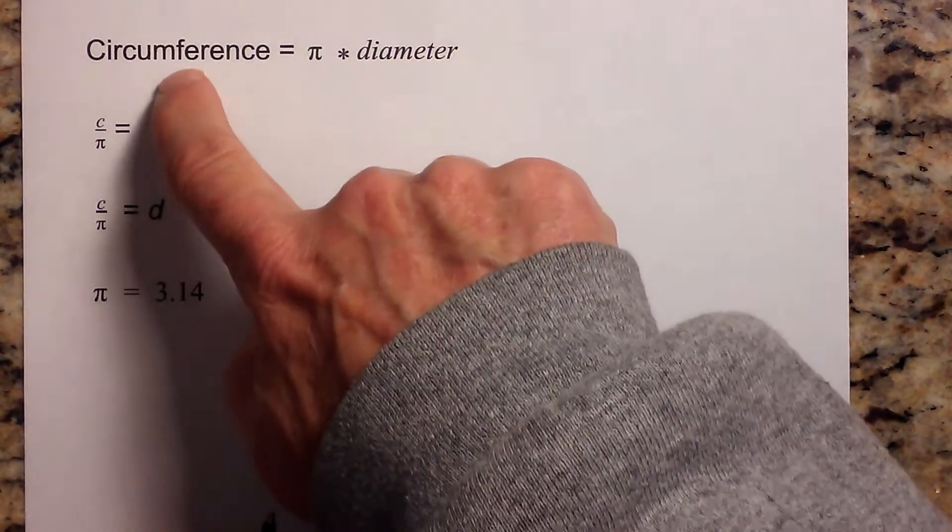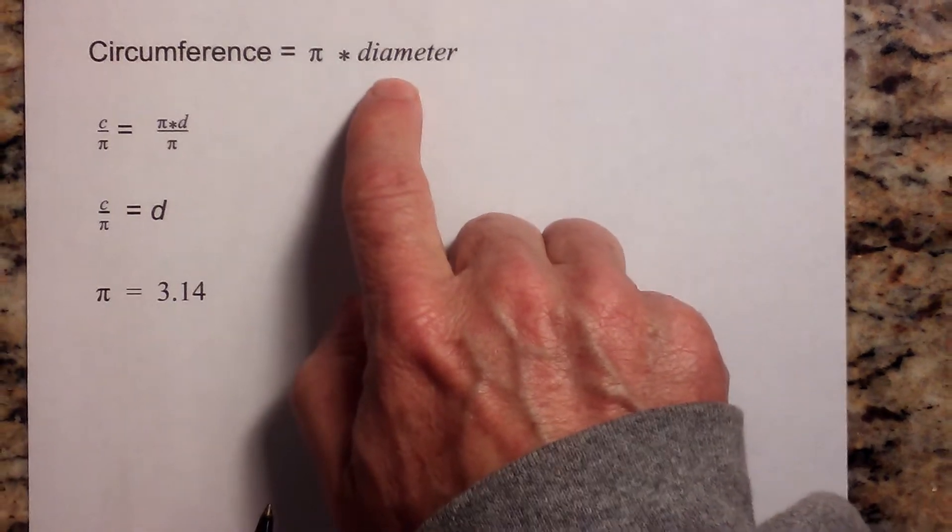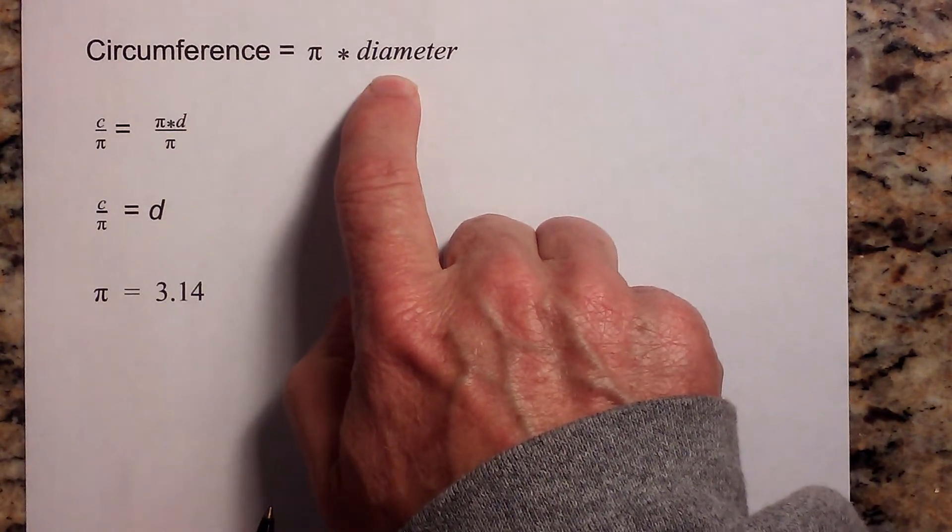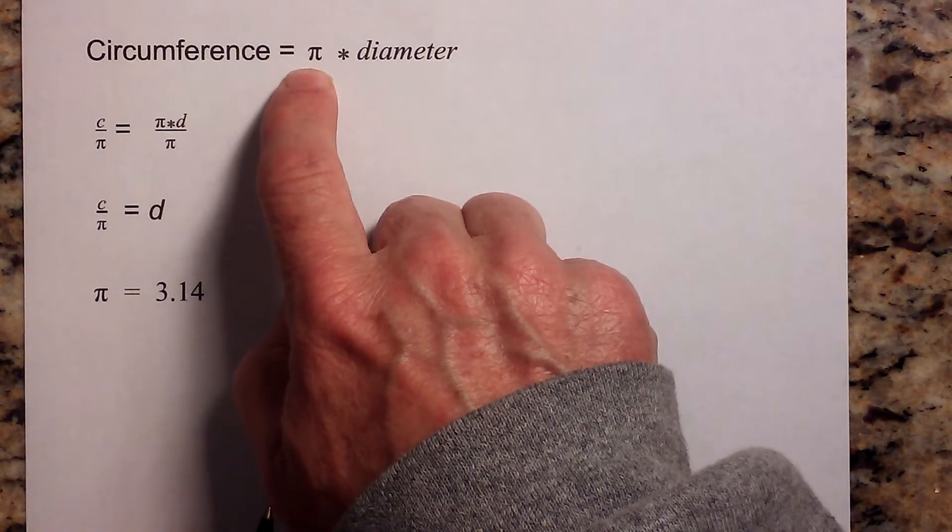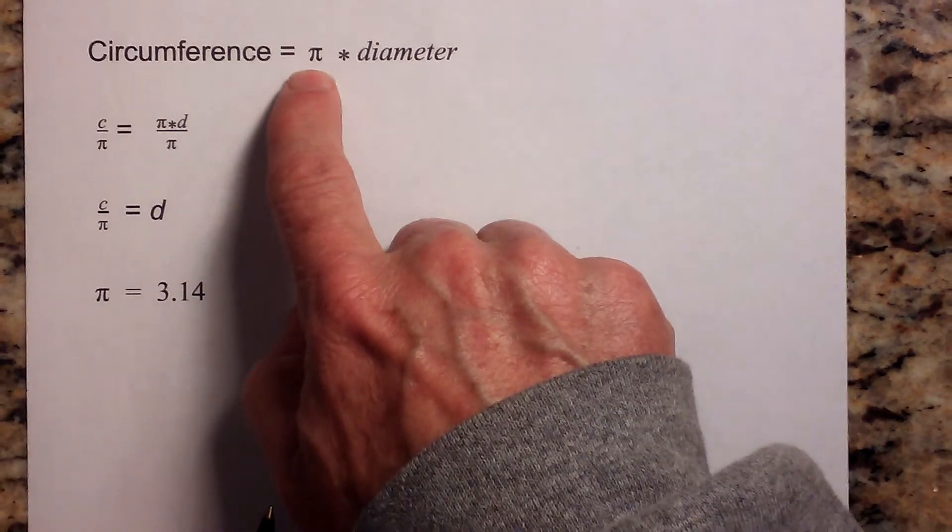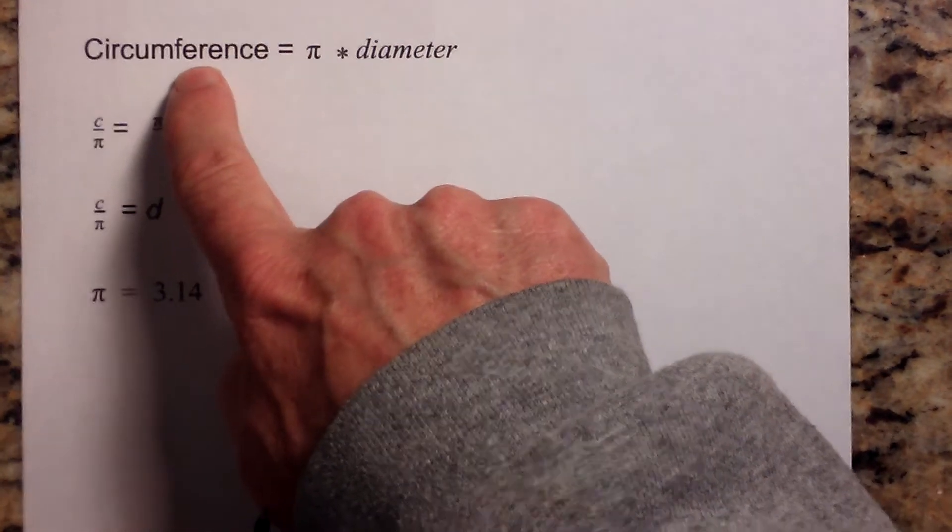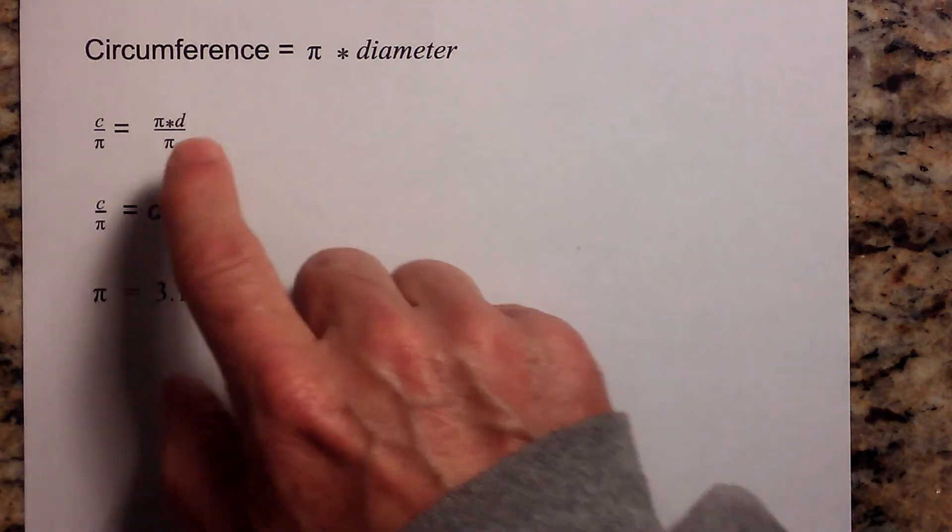Okay, so we want to isolate the diameter. In order to do that, we need to get rid of pi. We can do that by dividing both sides of the equation by pi, because what you do to one side of the equation you must perform to the other side.